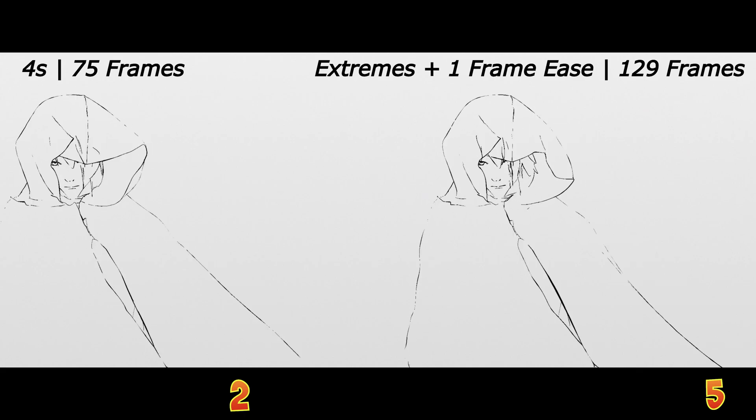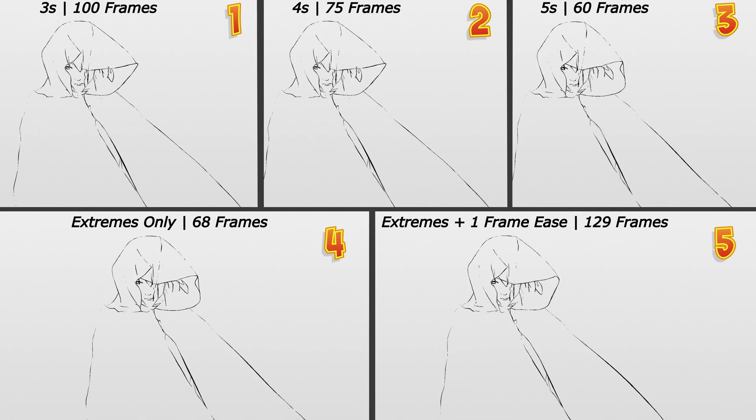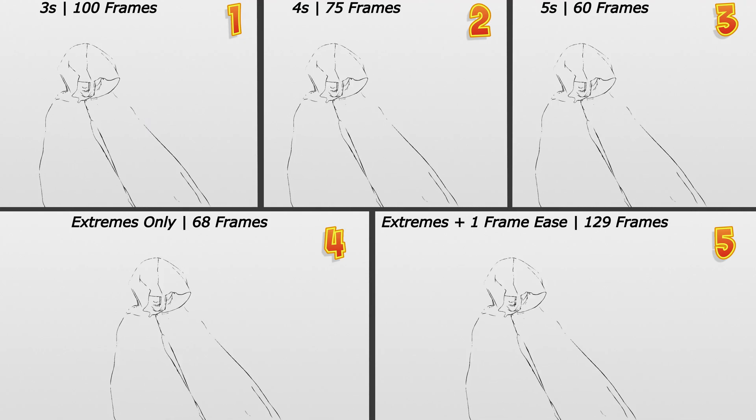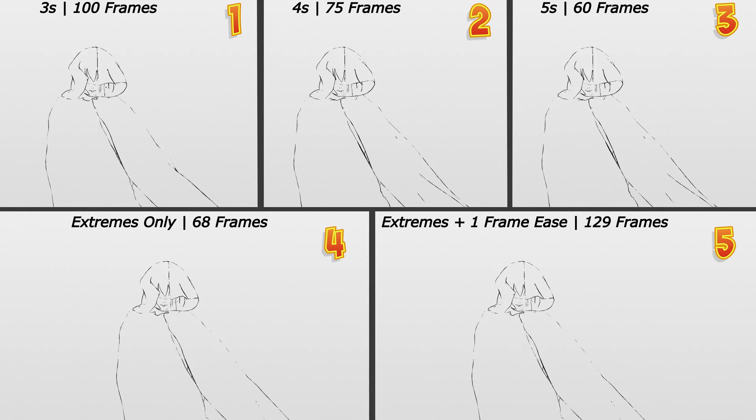I think option two — fours — is a nice compromise for this type of shot where there's a lot of motion but very slow movement. In the future, if there's a hero shot where I know it's worth investing the time or it really matches the story, that's where I'll switch to extremes plus one frame at the higher frame rate.